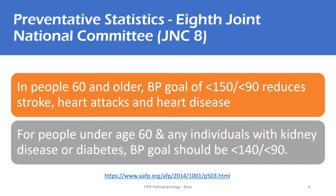As per the eighth report by the Joint National Committee on Prevention, Detection, Evaluation, and Treatment of High Blood Pressure, in people 60 and older, the blood pressure goal should be less than 150 systolic and less than 90 diastolic, which reduces the risk of stroke, heart attacks, and hypertensive heart disease. For people under the age of 60, and in any individual with kidney disease or diabetes, the blood pressure goal should be less than 140 systolic and less than 90 diastolic.